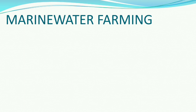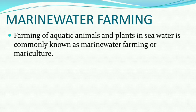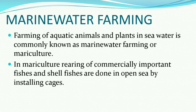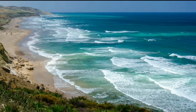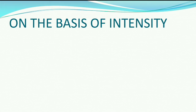The third type is marine water farming. Farming of aquatic animals and plants in sea water is commonly known as marine water farming, or mariculture. In mariculture, rearing of commercially important fishes and sea fishes is done in open sea by installing cages. We will have a look at these cages in the next slide.